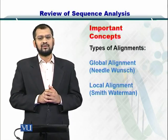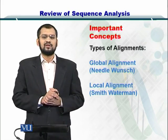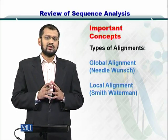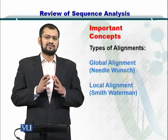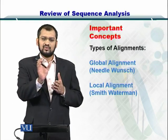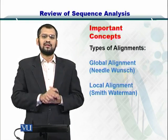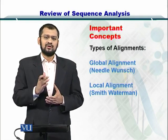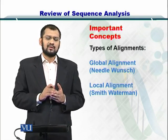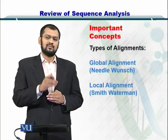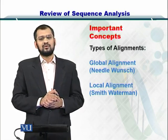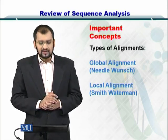The algorithm we used for the global alignment was the Needleman-Wunsch algorithm. For the local alignment, which is different from the global alignment in that we're trying to find portions within the sequence and comparing them with other protein or DNA sequences, the purpose is to find domains and motifs that are conserved between sequences. The algorithm used for this strategy was the Smith-Waterman algorithm.